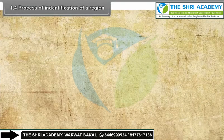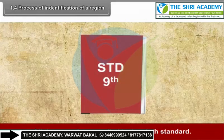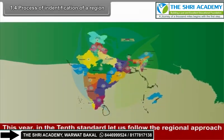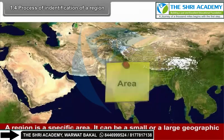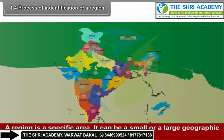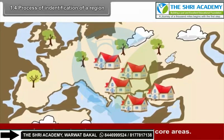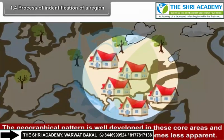1.4 Process of Identification of a Region. What is a region? On what basis are regions defined? This year, in the 10th standard, let us follow the regional approach for a detailed study of our country. A region is a specific area — it can be small or large. In each region, there are one or more core areas where the geographical pattern is well developed, and with increasing distance, the uniqueness becomes less apparent.